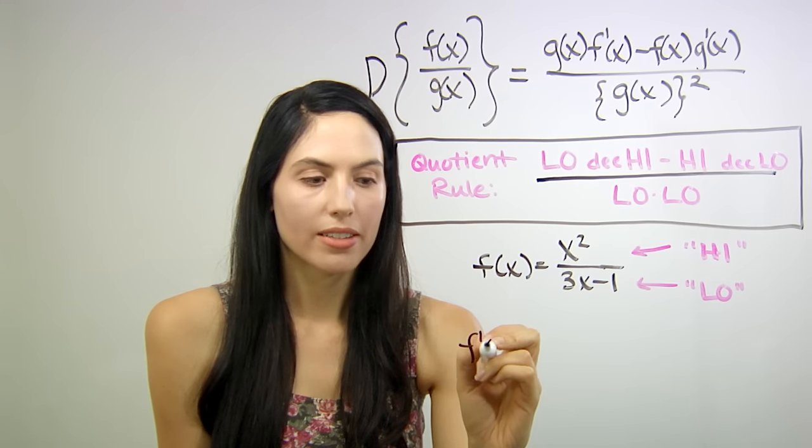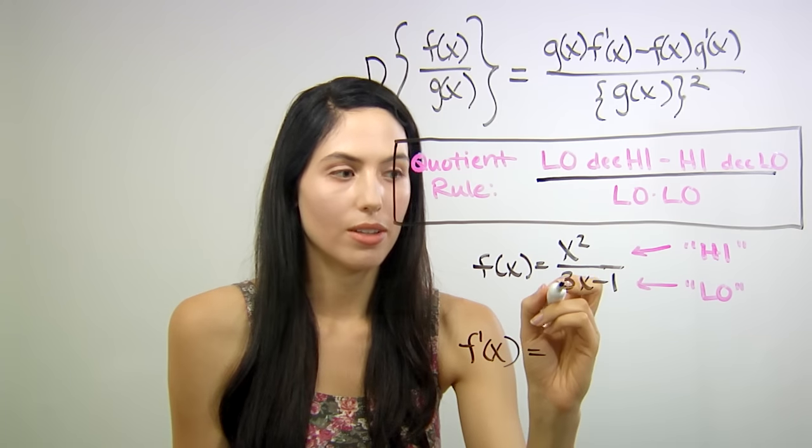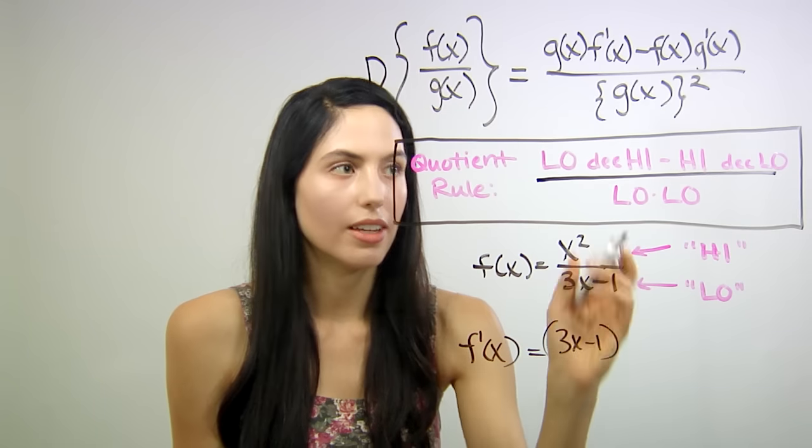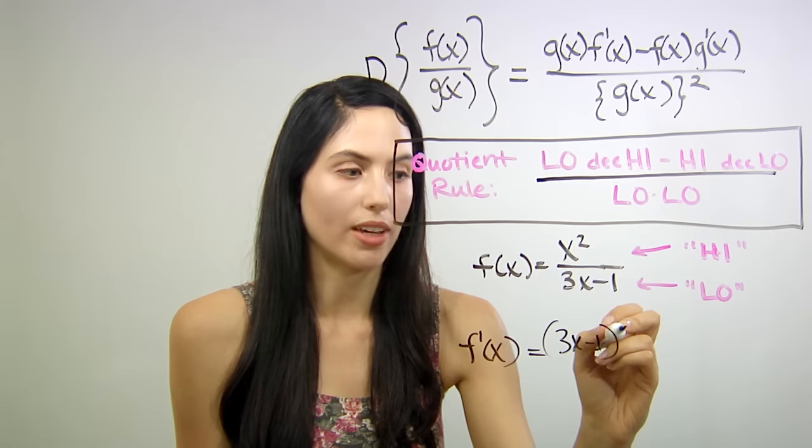f' will equal low, 3x-1, times d high, derivative of x squared, 2x,